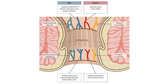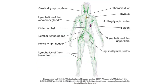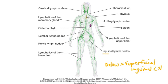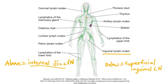Now let's talk about the lymph. Lymph above the pectinate line drains into the internal iliac lymph nodes, while lymph below the pectinate line drains to the superficial inguinal nodes. The inguinal lymph nodes are visible in this image, and the internal iliac nodes are located within the pelvic system of lymph nodes.